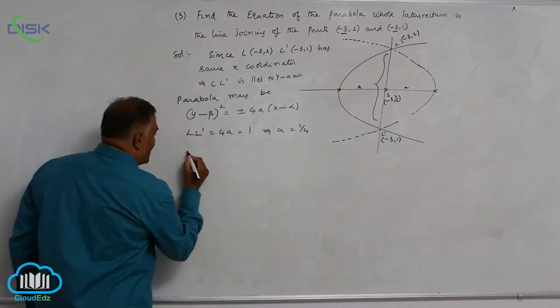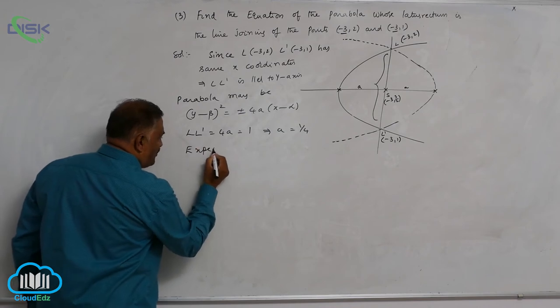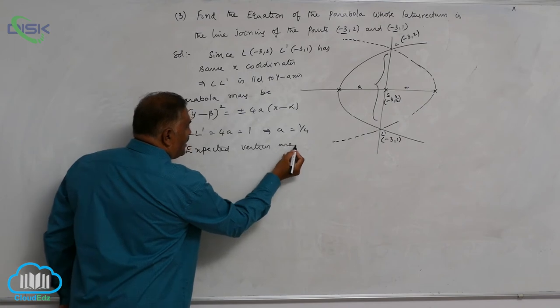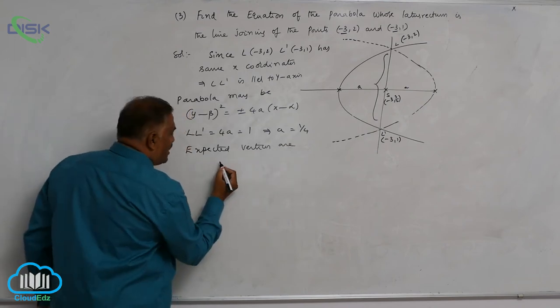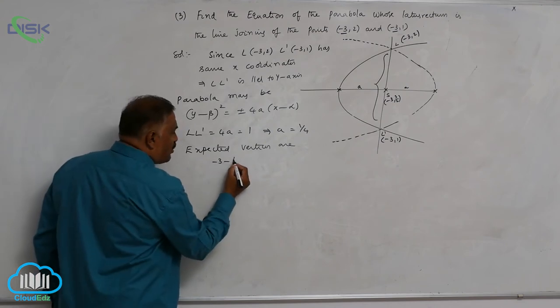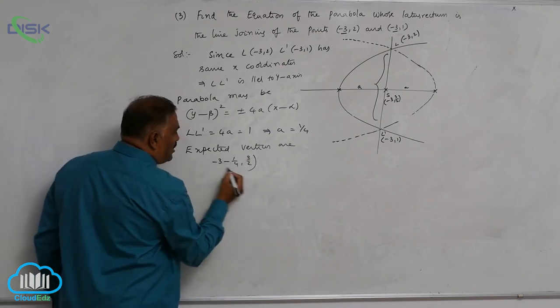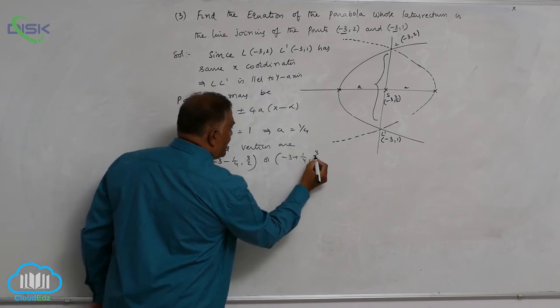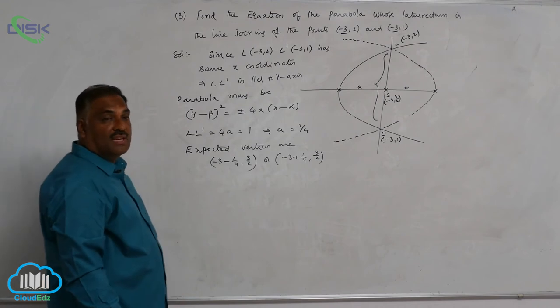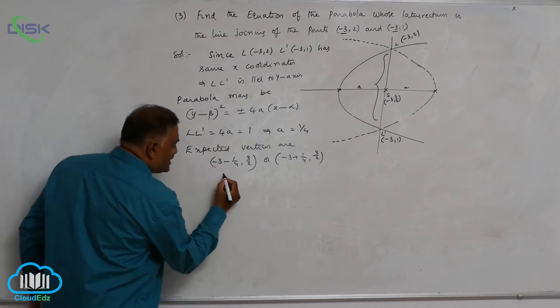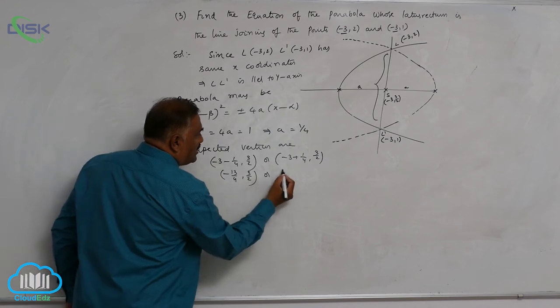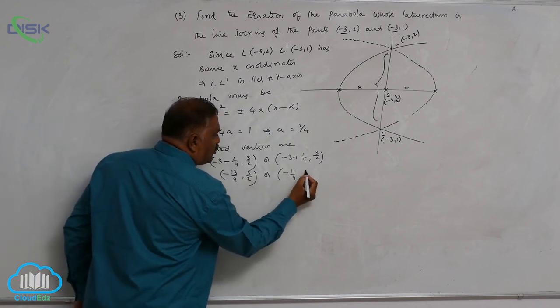So the expected vertices are given by (-3 - 1/4, 3/2) or (-3 + 1/4, 3/2). Now you can check once again after simplification: this is (-13/4, 3/2) or this is (-11/4, 3/2).